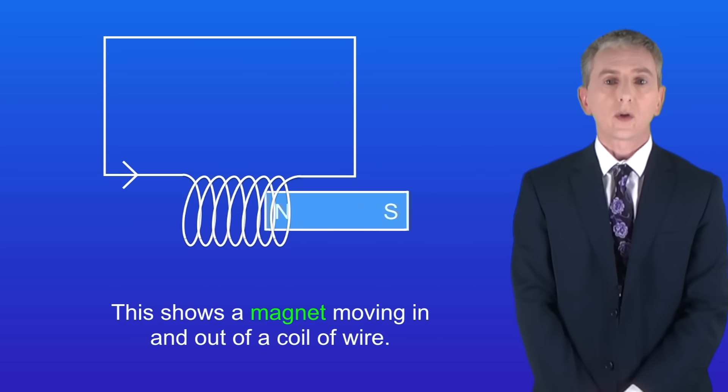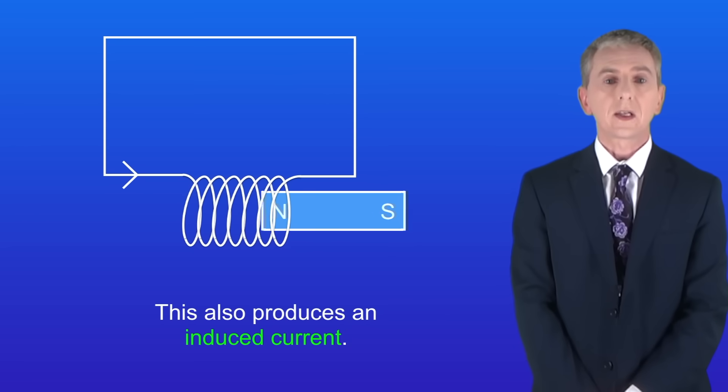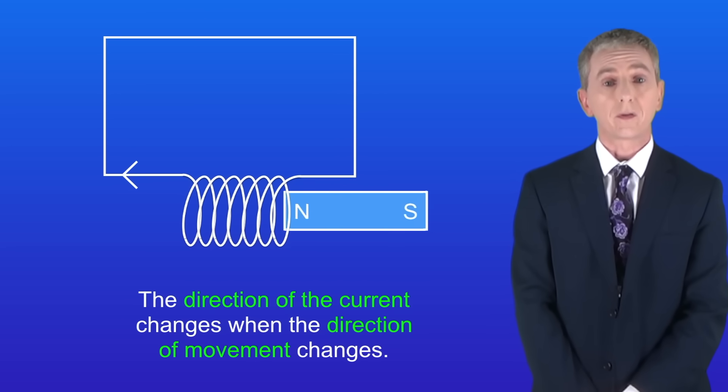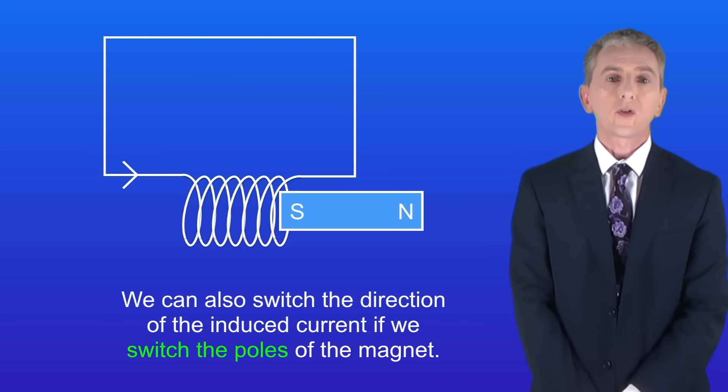In this case I'm showing you a magnet moving in and out of a coil of wire, and as you can see this also produces an induced current. Again you can see that the direction of the current changes when the direction of movement changes, just as we saw before. We can also switch the direction of the induced current if we switch the poles of the magnet like this.